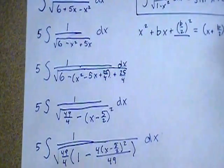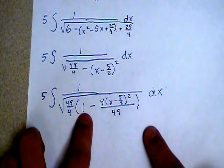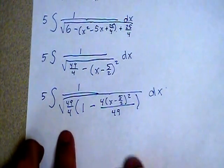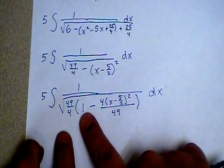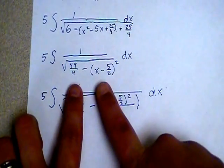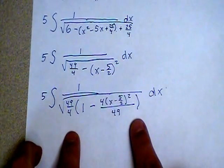And we completed the square, did a bunch of factoring. The last thing we were trying to do when the last video concluded was we were trying to create a 1 right here, so we factored a 49 over 4 out of these two terms from within that denominator.